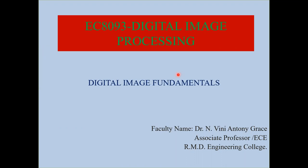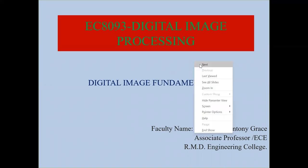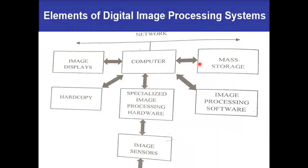A very good morning students. In this lecture, we are going to learn about the different elements of digital image processing system. If you look at this block diagram, these are the different elements or components required for digital image processing. There are eight basic components: image sensors, specialized image processing hardware, computer, mass storage, image processing software, hard copy, image displays, and network. Let us see the function of each element one by one.